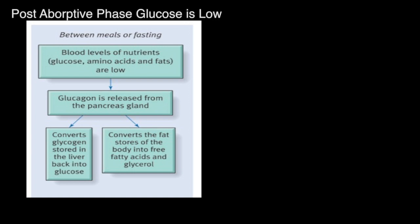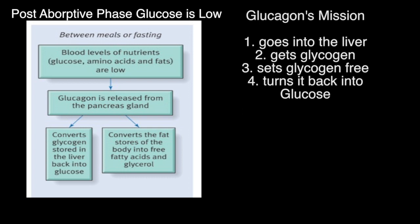Now let's look at the post-absorptive phase, when glucose and other nutrients are low and we need them for our energy. Glucagon is a hormone released from the pancreas gland — do not get this confused with glycogen. Glucagon is a hormone released from the pancreas gland; it goes into the cell and converts the glycogen.